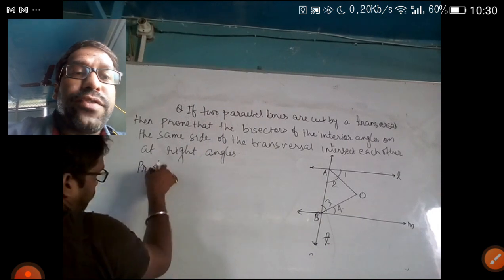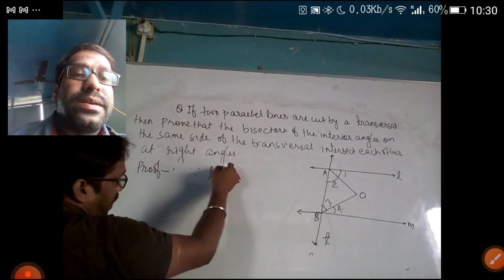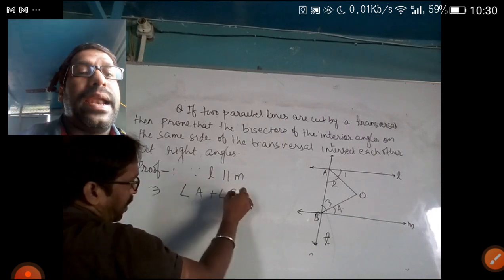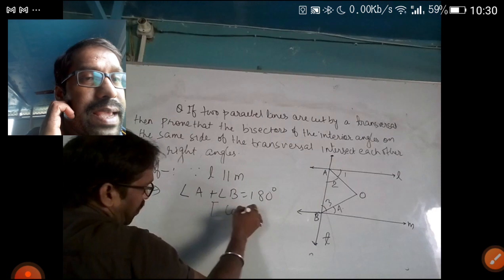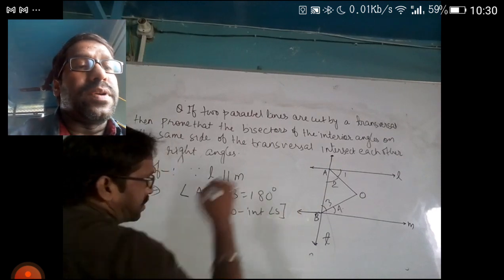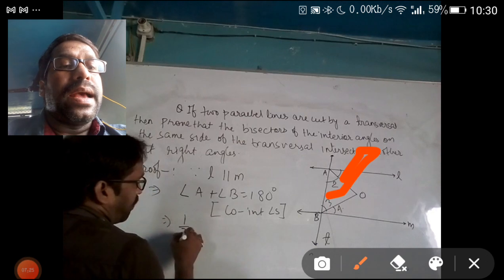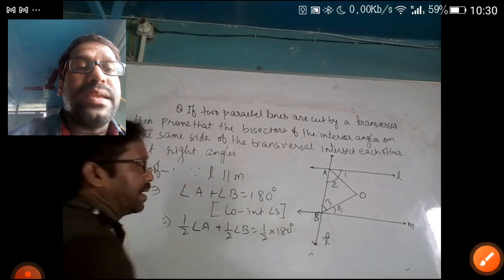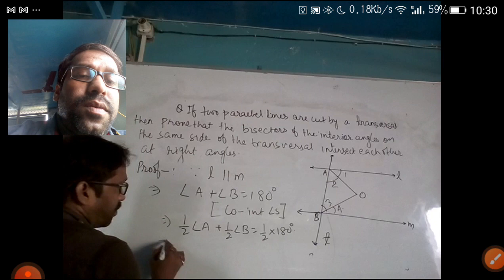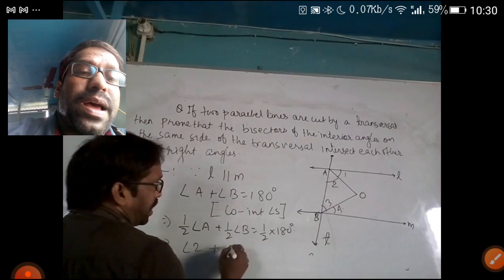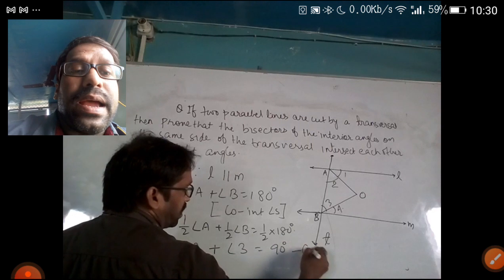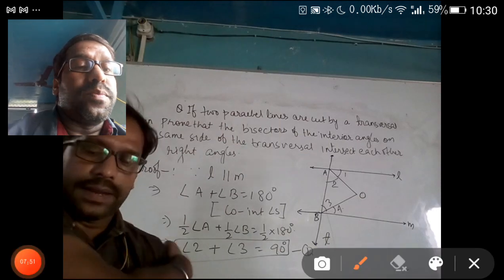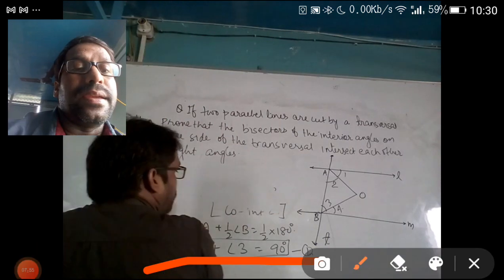We will use the consecutive interior angle property, which states that if two lines are parallel, then angle A plus angle B equals 180 degrees. So their halves will also be equal. Half of angle A is angle 2, and half of angle B is angle 3. Therefore, angle 2 plus angle 3 equals 90 degrees. Remember this important result.